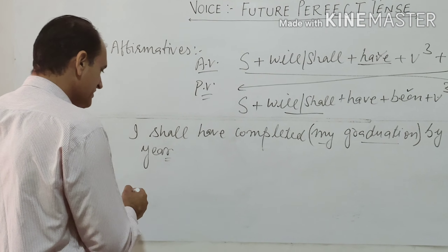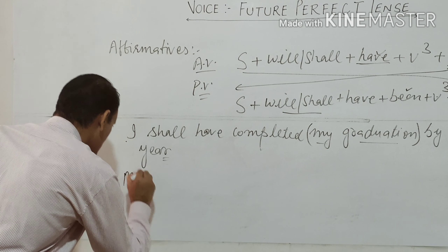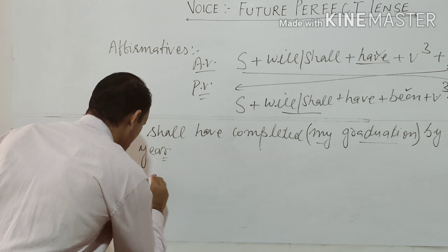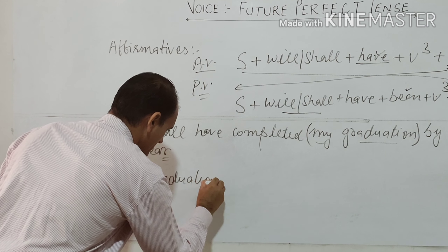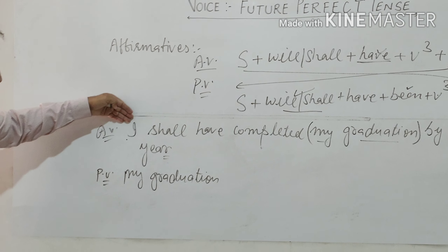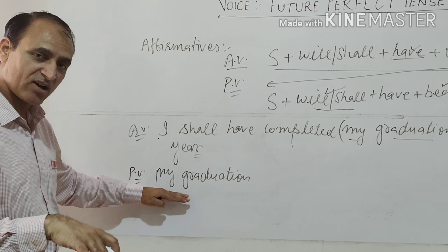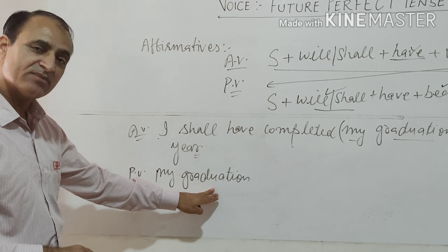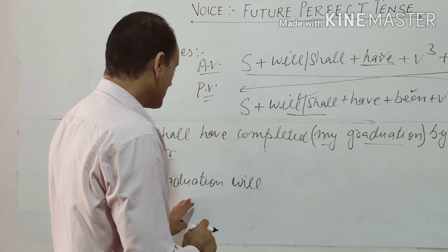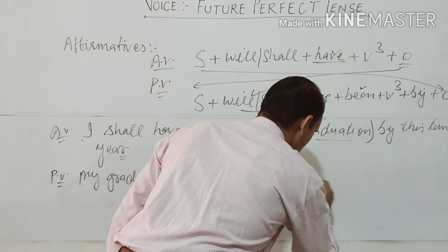So let's make it into passive. My graduation becomes our subject. Now in active voice the subject was a first person pronoun, so we used shall. But in passive voice our subject has changed — graduation is third person, so we have to use will in place of shall. The structure becomes: my graduation will have been...